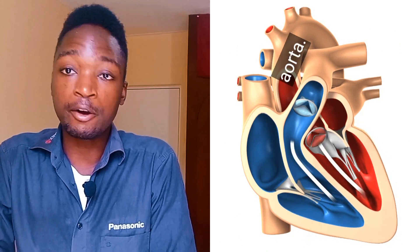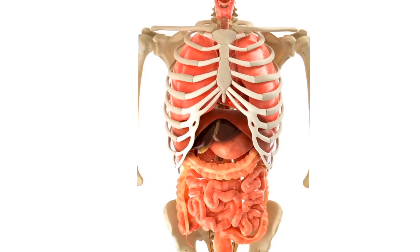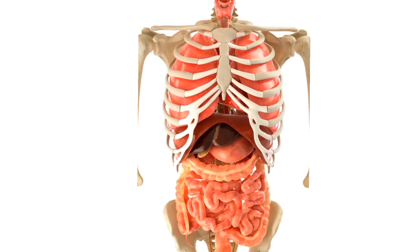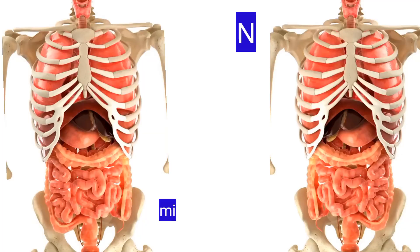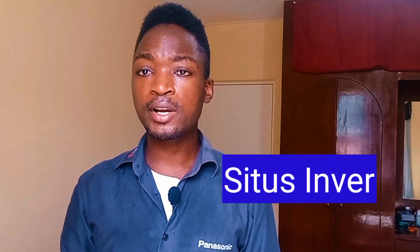Blood is then pumped into the left ventricle, which has thicker muscles enabling it to pump blood to the rest of the body via the aorta. The normal positioning of organs in the human body — especially those in the chest cavity and abdominal cavity — is known as situs solitus.